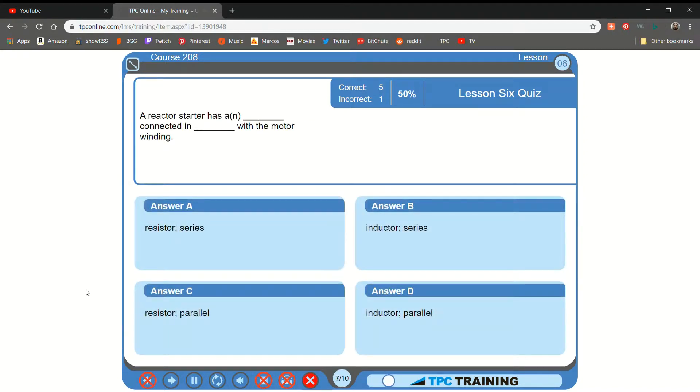A. A reactor starter has... A. A resistor connected in series with the motor winding. B. An inductor connected in series with the motor winding. C. A resistor connected in parallel with the motor winding. D. That is correct.